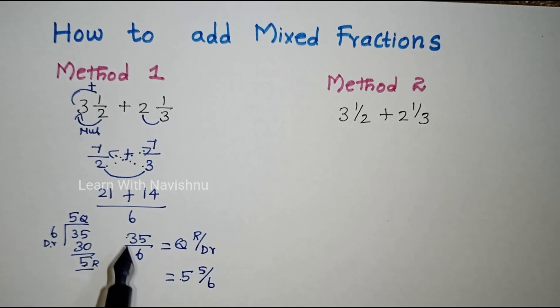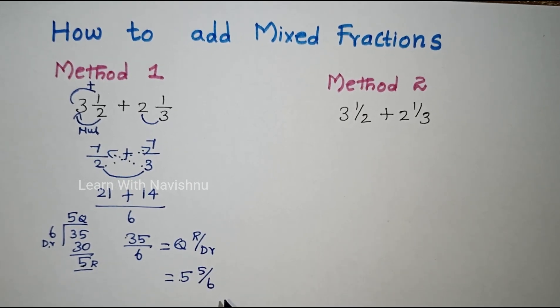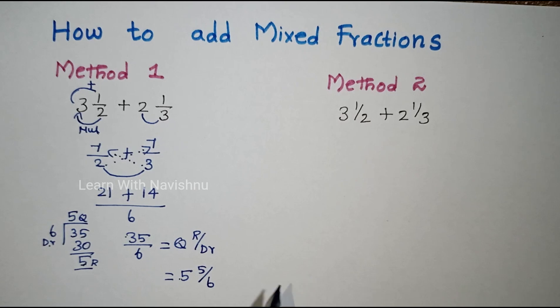We need to stop at 6. 6 times 5 is 30, 30 plus 5 equals 35/6. Correct. The question is mixed fractions, the answer is mixed fractions. This is Method 1.